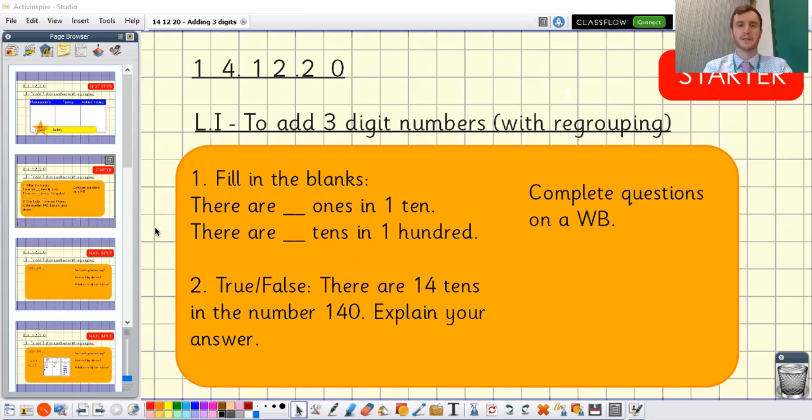As a starter today, a very similar starter to last time. Fill in the blanks that you can see for question one. So there are blank ones in 1 ten and there are blank tens in 1 hundred. And then for the second one, true or false, there are 14 tens in the number 140 and for that one you'll have to explain your answer. If you want to pause there to give you a chance to write down your answer please do so and we'll go through together in just a moment.